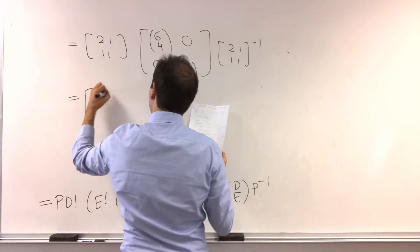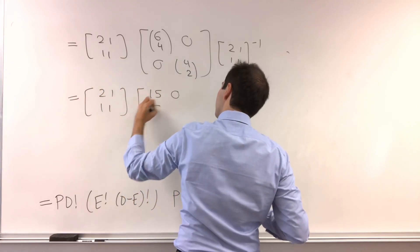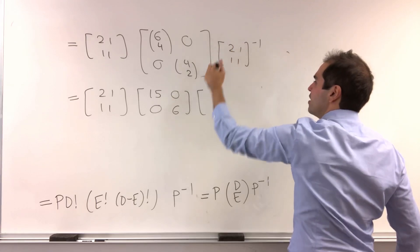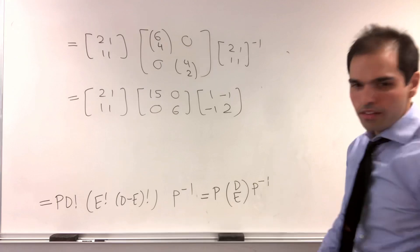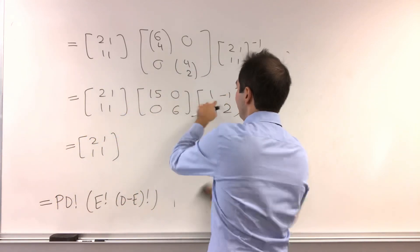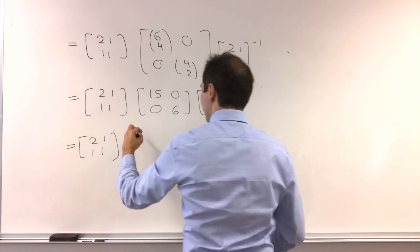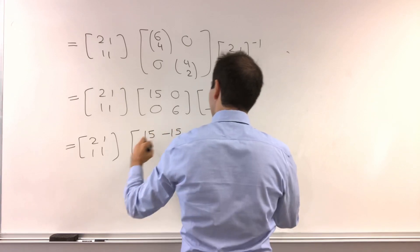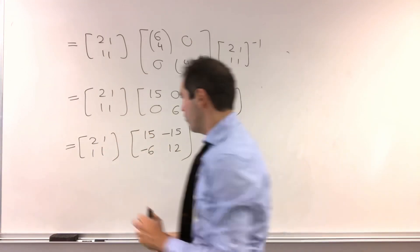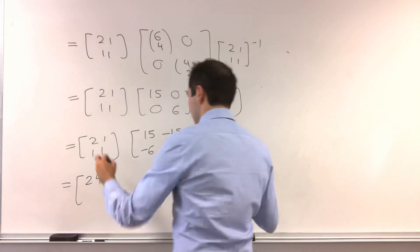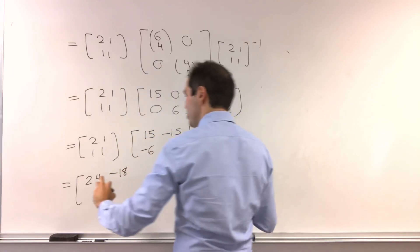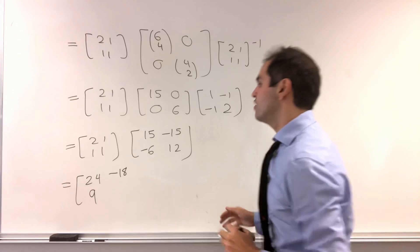But then 6 choose 4, I believe that is 15, 0, 0, 4 choose 2, that is 6. And then the inverse is quite nice because it's determinant 1. So 1 over 1, and then 1, 2, minus 1, minus 1, which in the end just gives us 2, 1, 1, 1. All right, let's see. So 15 times 1, and then we do 15 on the first row and 6 on the second row. 15, minus 15, minus 6, and 12, which gives you, I think, 30 minus 6, which is 24. And let's see. Minus 30 times, plus 12, that is minus 18. 15 minus 6, that is 9. And then minus 15 plus 12, that is minus 3.